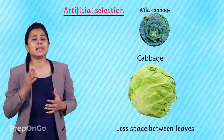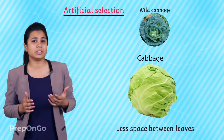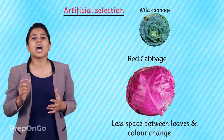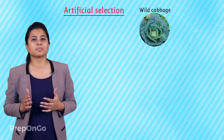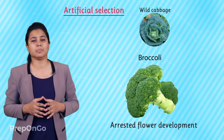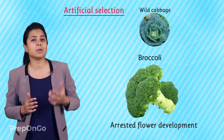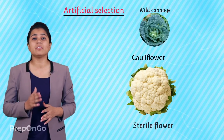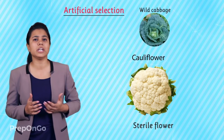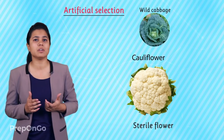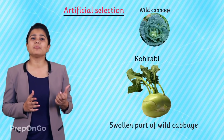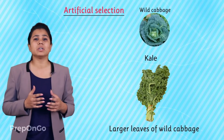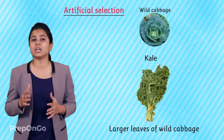Some farmers wanted very less space between the leaves of the wild cabbage so they bred it that way and we got the cabbage that we eat. Some farmers also wanted a color change, so they bred the red cabbage. Another method used was arrested flower development, where the development of the flower is stopped midway — and so we got broccoli. Sterile flowers, which for some reason are not pollinated or fertilized, were selected by some farmers to give rise to cauliflower. Some farmers chose the swollen part of the wild cabbage and came up with kohlrabi, while others chose the larger leaves and gave rise to kale.